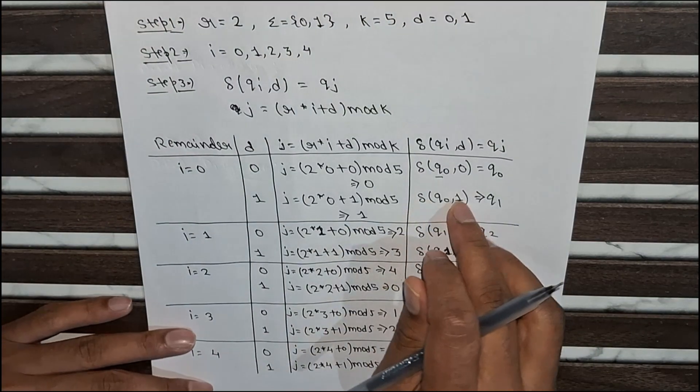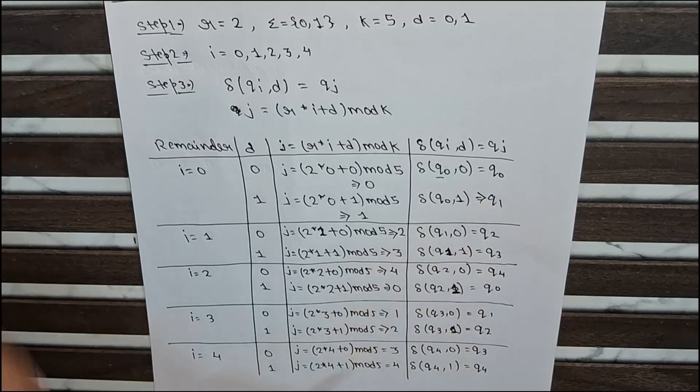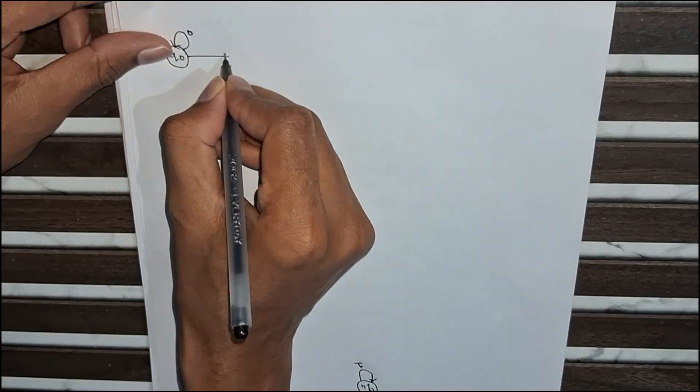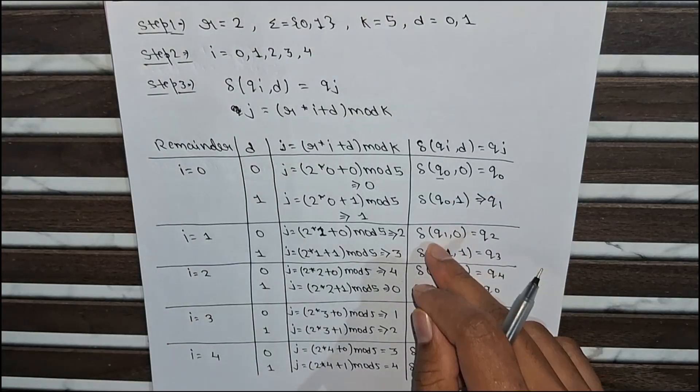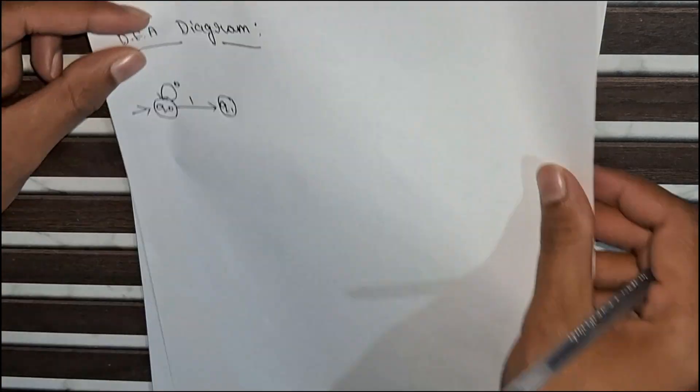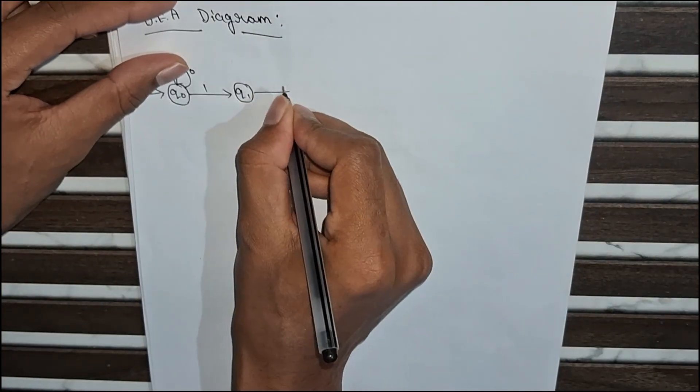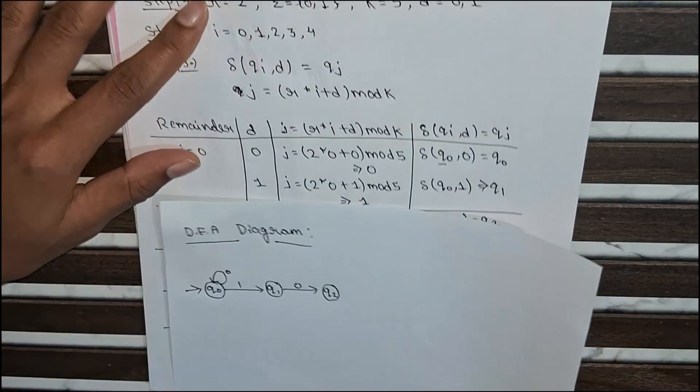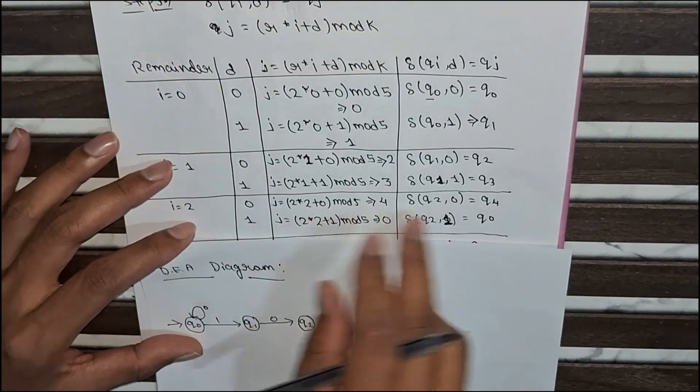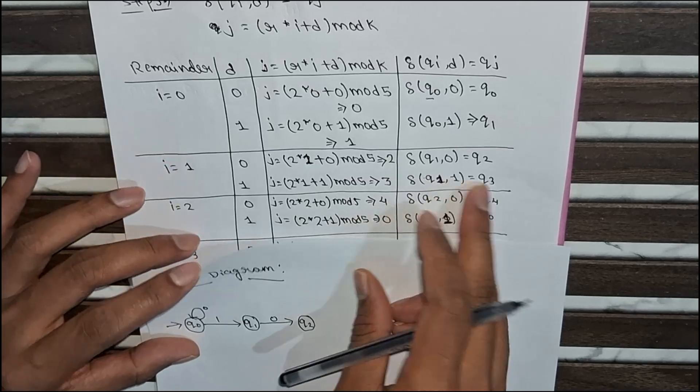Now, q0 with input symbol 1 goes to q1. Then q1 with input symbol 0 goes to q2. And q1 with input symbol 1 goes to q3.